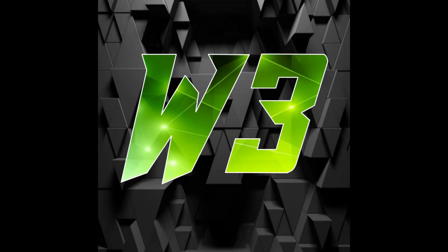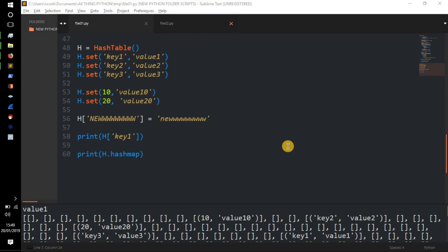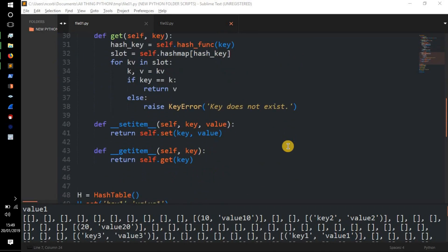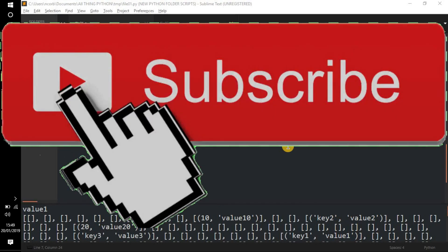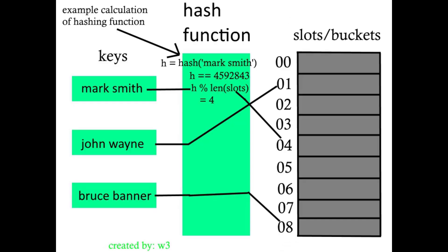Welcome to the channel, it's W3 here. In today's Python tutorial video we're going to be looking at a hash table or hash map, and we're also going to be implementing our own dictionary in Python. A dictionary is an associative array, also known as hashes. Any key of the dictionary is associated or mapped to a value. The values of a dictionary can be any Python data type, so dictionaries are unordered key-value pairs and belong to the built-in mapping type.